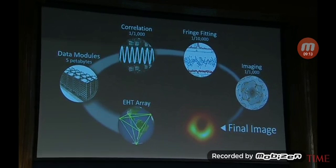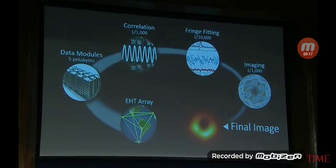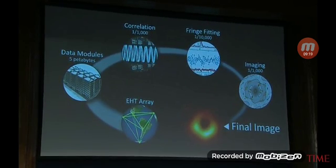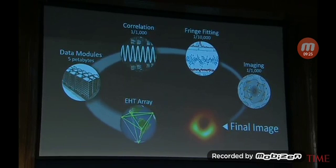And so we do something called fringe fitting. We actually do this in the cloud, with cloud computing, which lets us do it in days instead of weeks. We calibrate the data so that we know exactly how bright our sources are.